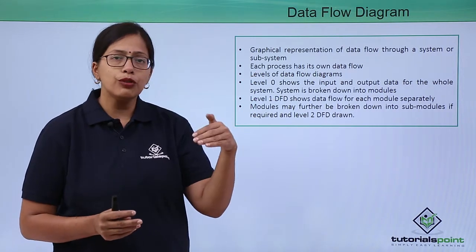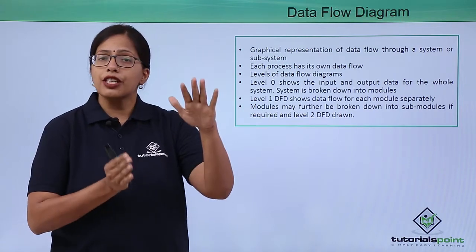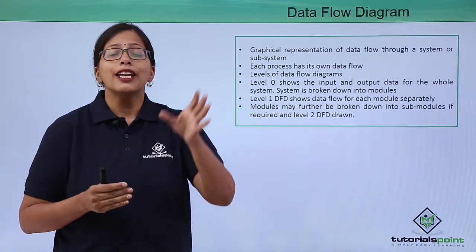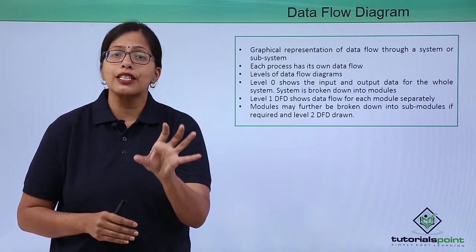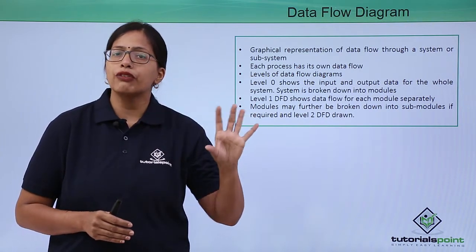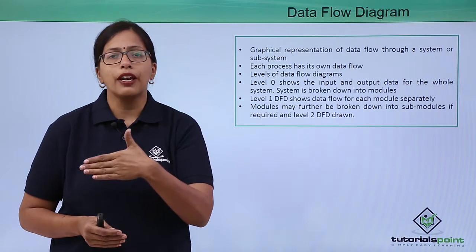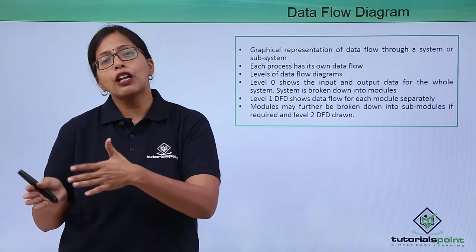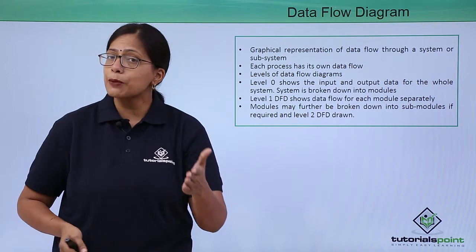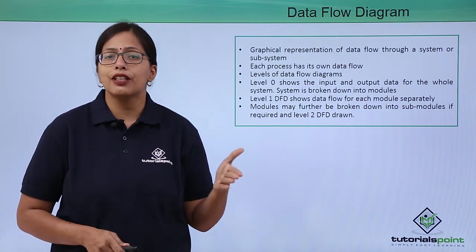DFD at level 0 shows the whole system, the input data, and the output data. If the system has to be broken down into further modules, each module or process will have its own data flow diagram, forming DFD level 1. That can be broken down further into level 2, level 3, as per the requirement.